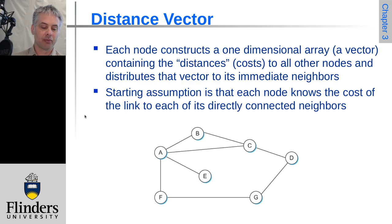That might be, for example, a very common approach is where the cost is inversely proportional to the speed. So for example, gigabit ethernet might be given a cost of one, 100 megabit ethernet might be given a cost of 10.